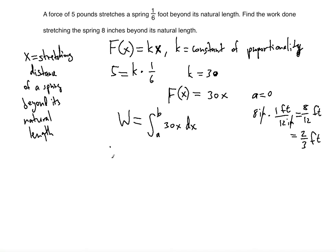So that means the integral will be, the work done, will be from 0, integrating from 0 to 2/3, the function of 30x dx. So now as you should know, the integral becomes 30 over 2 x squared, because we raise the power of x by 1.